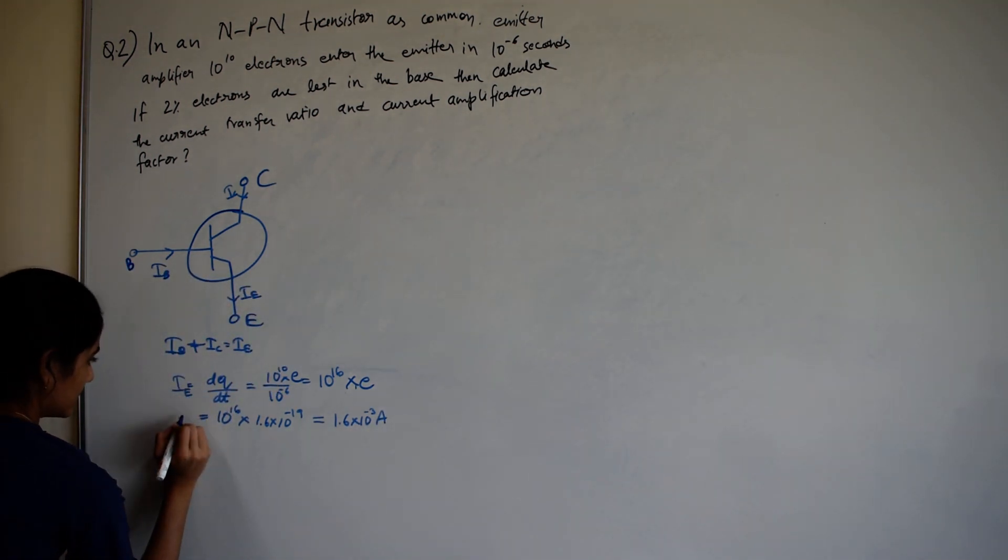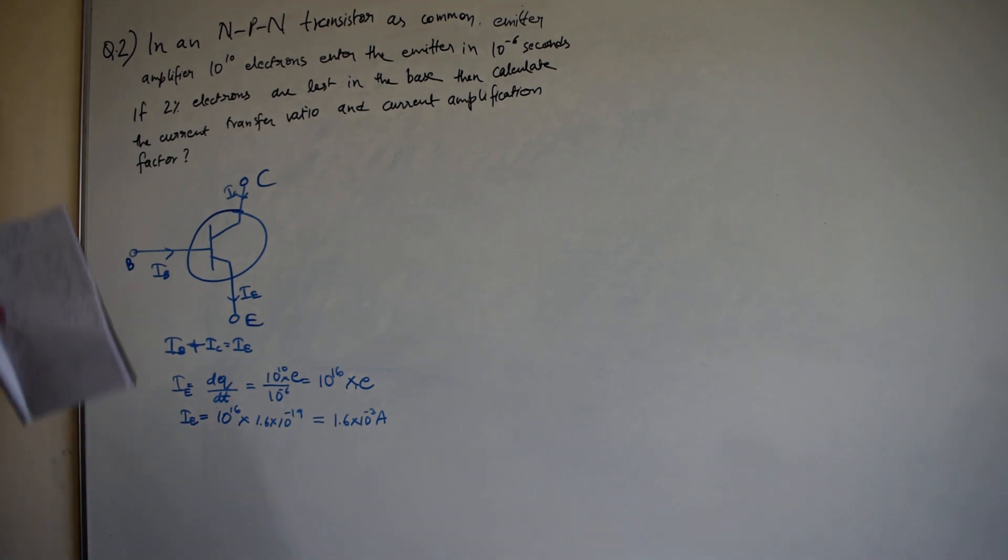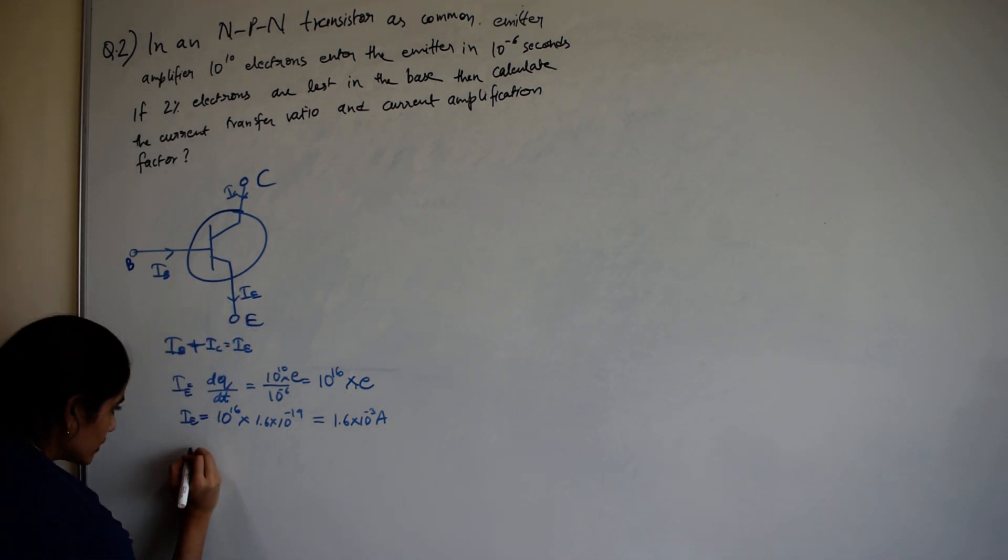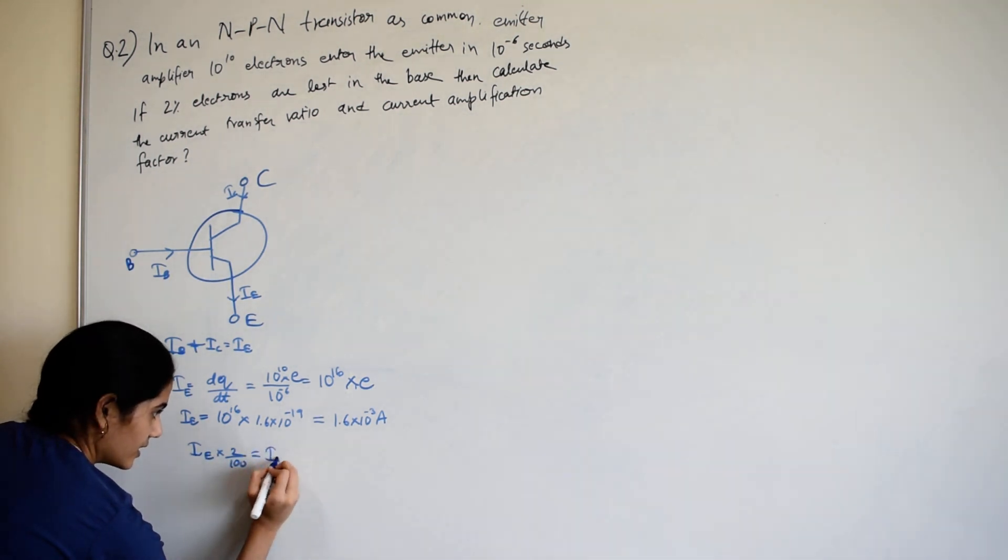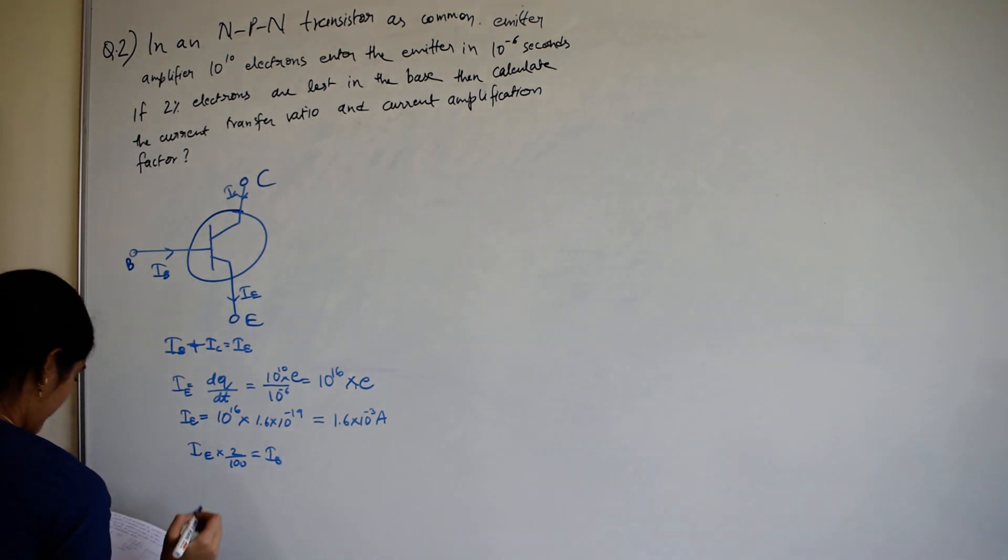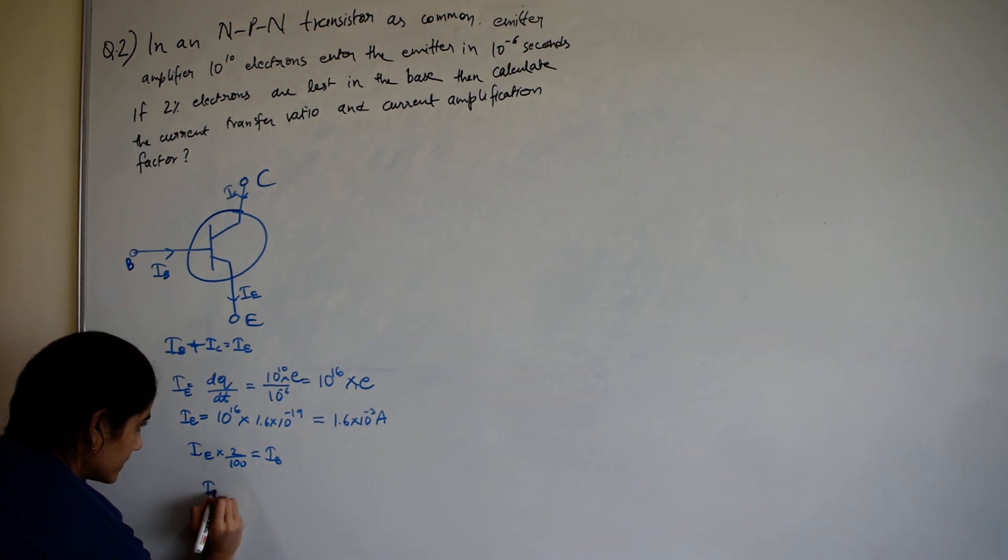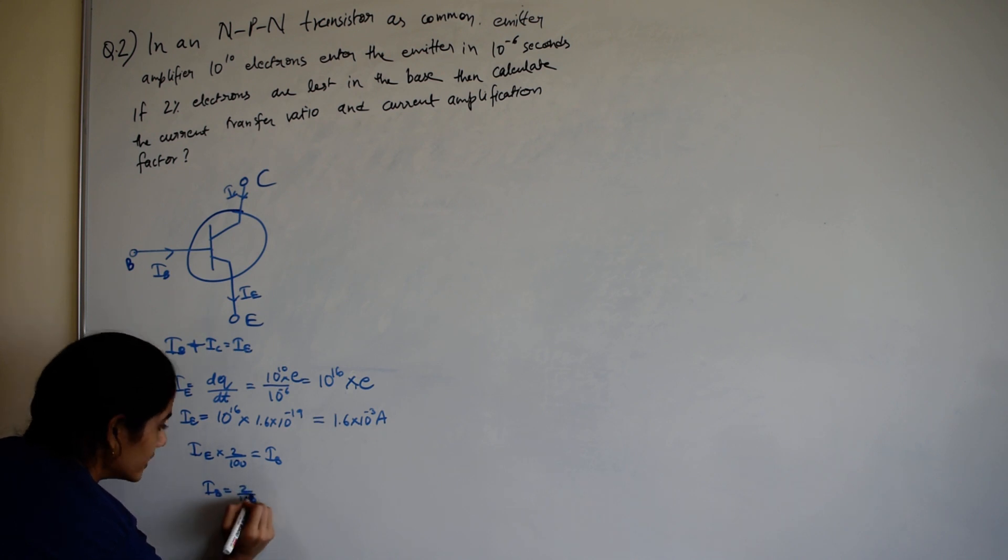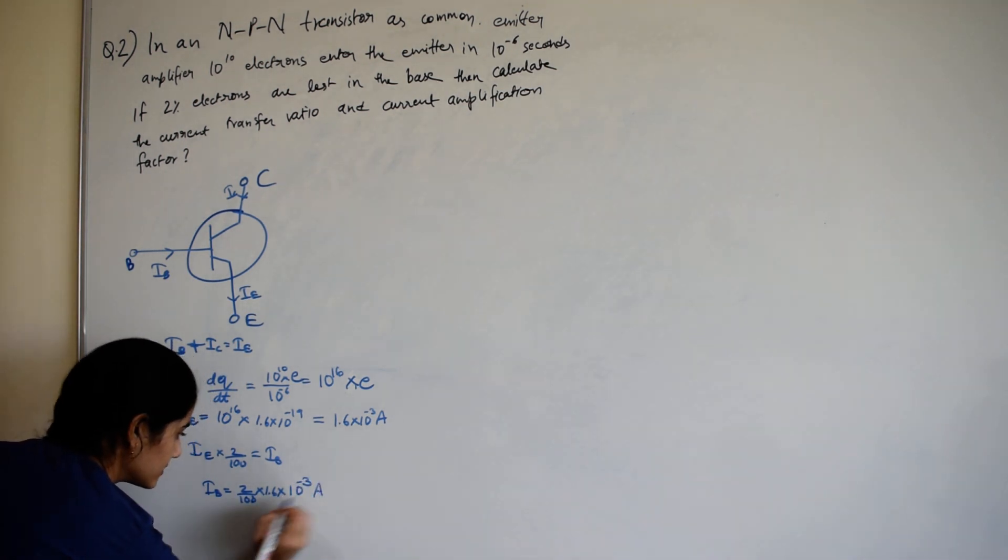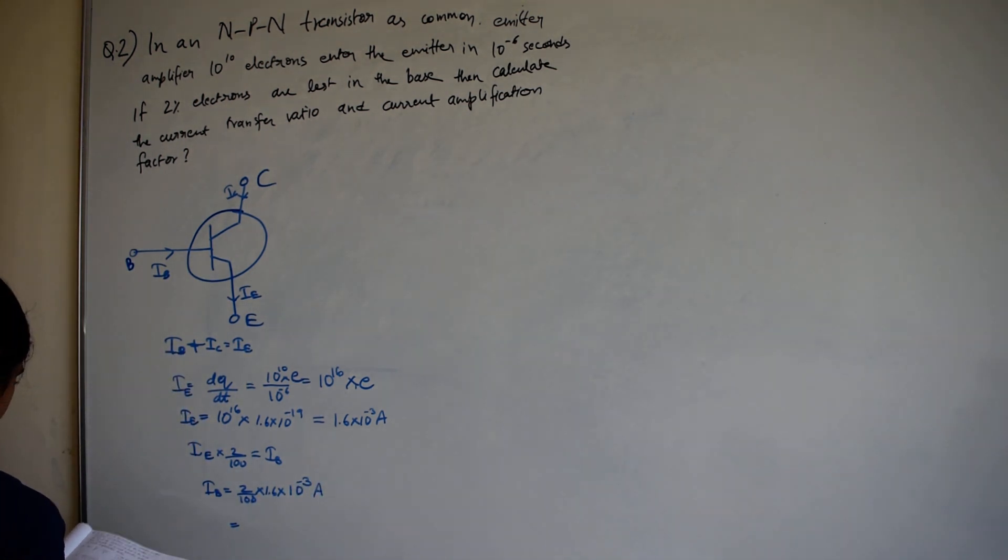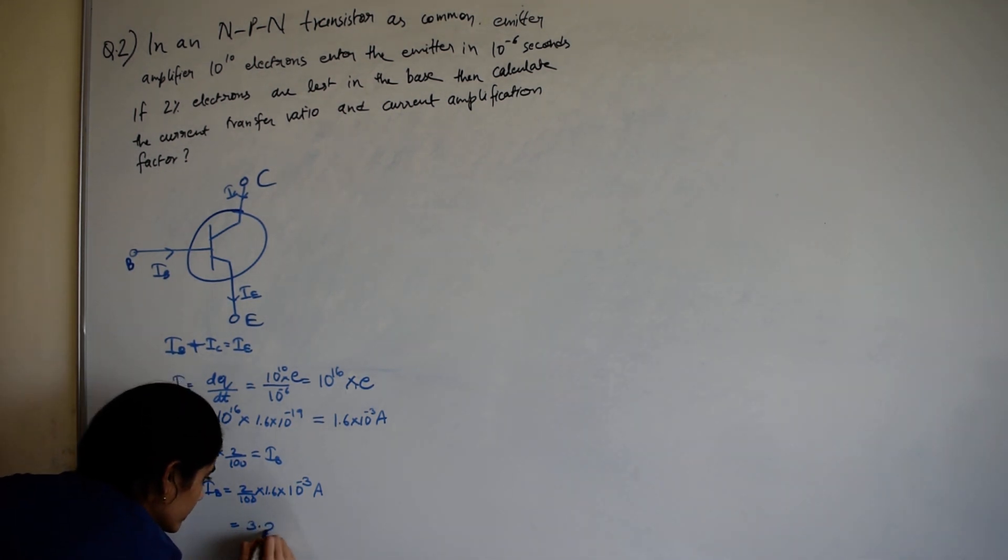And if there is 2% of electrons are lost in base, then current in the base, which is equal to 2 divided by 100 into 1.6 into 10 raised to minus 3, which is equal to 3.2 into 10 raised to minus 5.